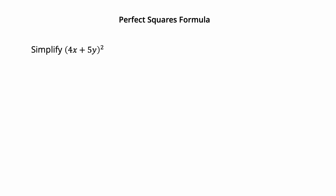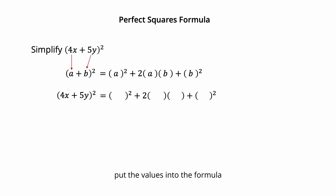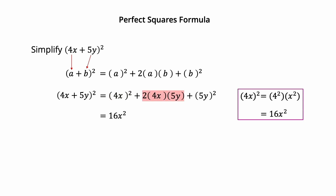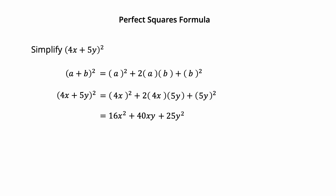Simplify the square of 4x plus 5y using the perfect square formula. 4x is a and 5y is b. The square of 4x is 4 squared times x squared, which simplifies to 16x squared. 2 times 4x times 5y equals 40xy. The square of 5y is 5 squared times y squared, which is 25y squared. Therefore, the square of 4x plus 5y equals 16x squared plus 40xy plus 25y squared.